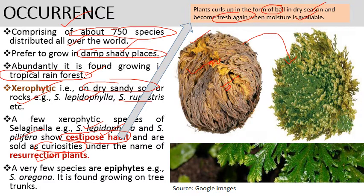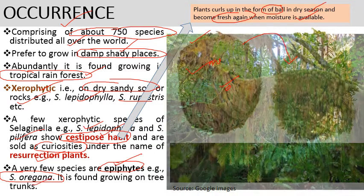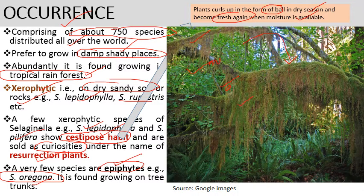A few species of Selaginella are epiphytic — they grow on tree surfaces. For example, Selaginella oregana is found growing on tree trunks, as shown in this photograph.